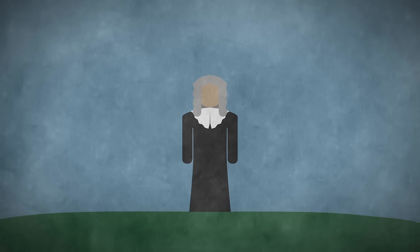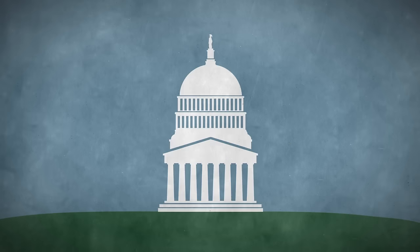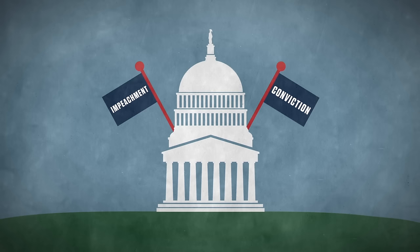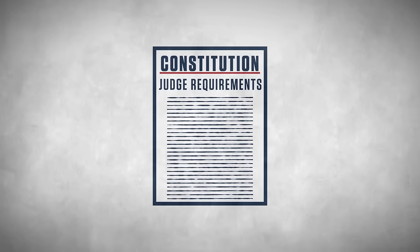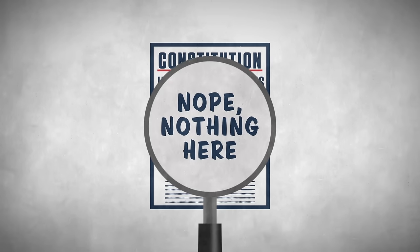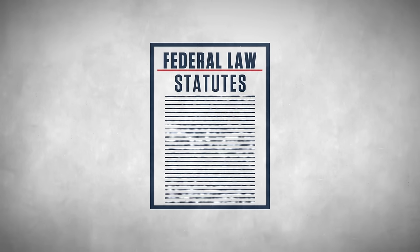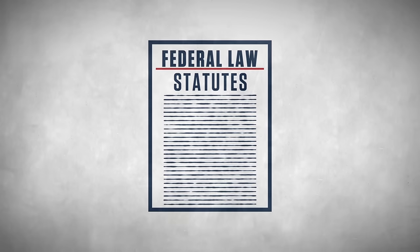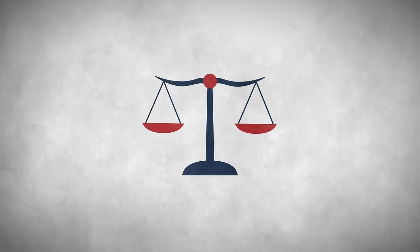Justices don't have term limits. They're able to serve until they die, retire, or are removed by Congress through impeachment and conviction. The Constitution itself doesn't give any specific requirements for who can and cannot be a justice. In fact, federal law doesn't even require a federal judge to be an attorney, but traditionally most of them have worked as lawyers.